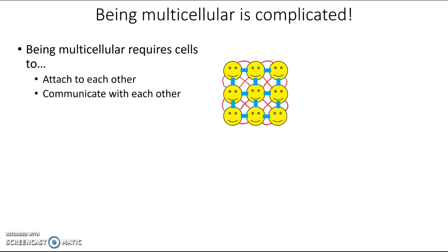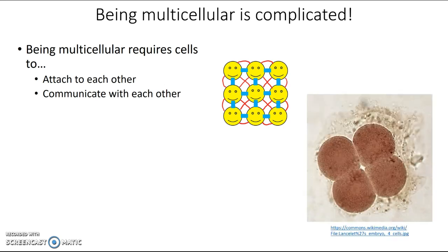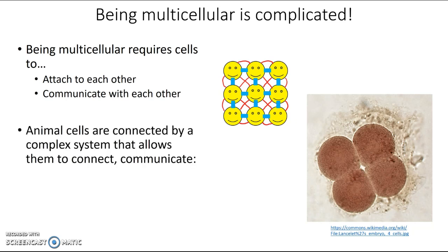This starts very early on in the existence of a multicellular organism. Here's an image of an embryo of a very primitive fish-like creature, and each of these brown blobs is one cell. You can see that already, very early on in its development, these cells are firmly attached to each other, and they're already communicating with each other constantly to make sure that each cell is doing its job. So animal cells in multicellular organisms are connected by a complex system that allows them to connect and communicate with each other — and this is the extracellular matrix.